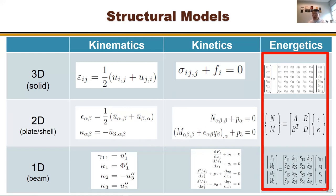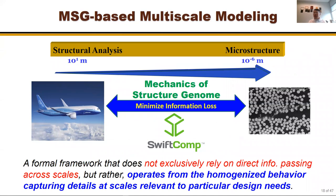So the research focus for material structures is on getting material properties and constitutive relations. The method I've developed is called Mechanics of Structure Genome (MSG). It looks at what the material is made of and what model you want for your system design, then minimizes the loss of information between those two models. We focus on length scales from microns up to the full structural scale, implemented in a code called SwiftComp.